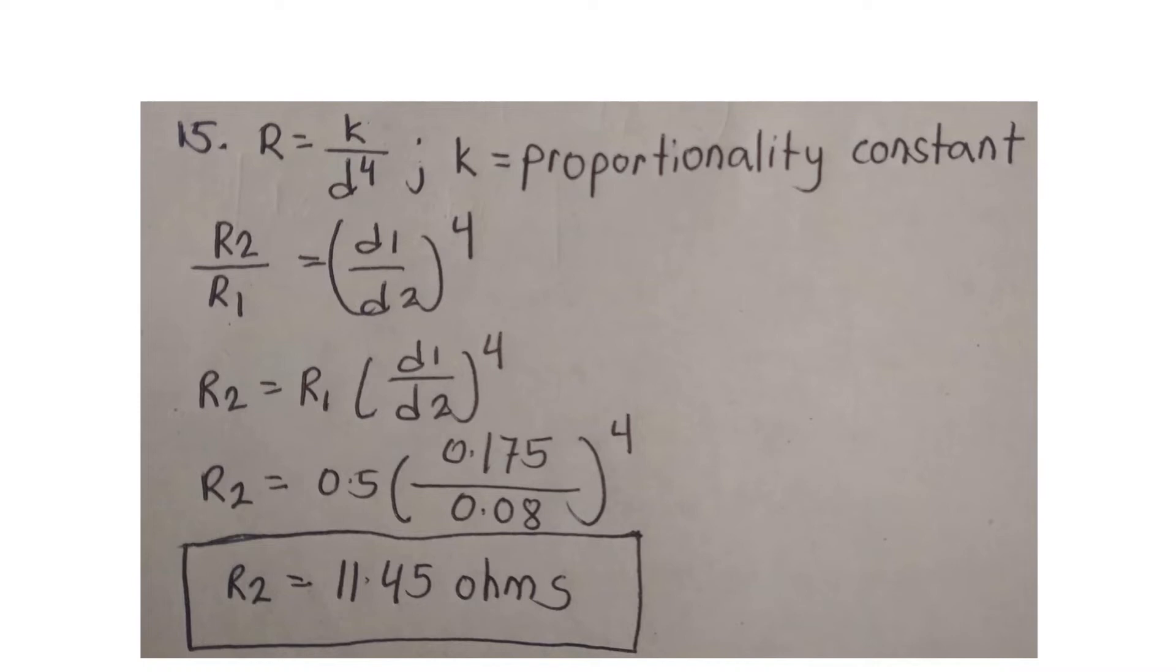And then we will substitute the given, which is R1 equals 0.45 and D1 equals 0.175 inch and D2 equals 0.08 inch, which will come up to the resistance of 11.45 ohms.